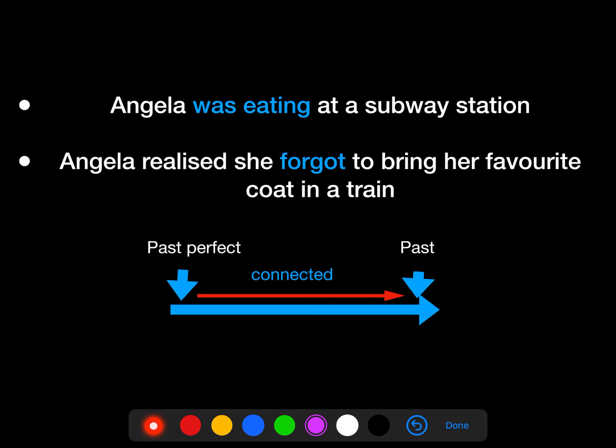Now let's move on to another example. We have two events: Angela was eating at a subway station. Angela realized she forgot to bring her favorite coat on the train. We need to connect these two sentences into one, so we need to use the past perfect tense.